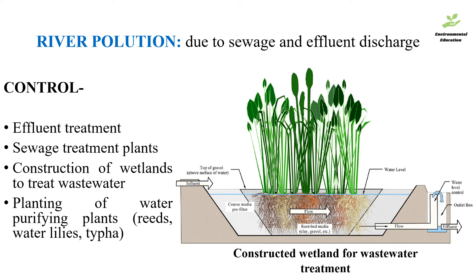Pollution in rivers is mainly caused due to the discharge of effluents and sewage into the river systems. It can be effectively controlled by effluent treatment, by sewage treatment plants, and by construction of wetlands to treat the wastewater.